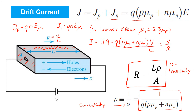Note that resistivity has units of ohms times length, or ohm-meters. You'll see that when substituted into this expression, units of ohm-meters result in the expected units of ohms for the resistance of the semiconductor bar R.